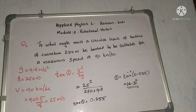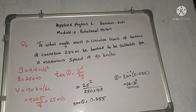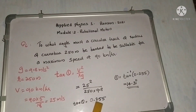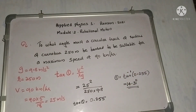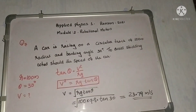For a speed of 90 km per hour, converting: 90 multiplied by 5 by 18 equals 25 m per second. Substituting directly: v² = 25² divided by R = 250 into 9.8. Calculation gives tan θ = 0.255, so θ = 14.31 degrees. The angle of banking is 14.31 degrees.